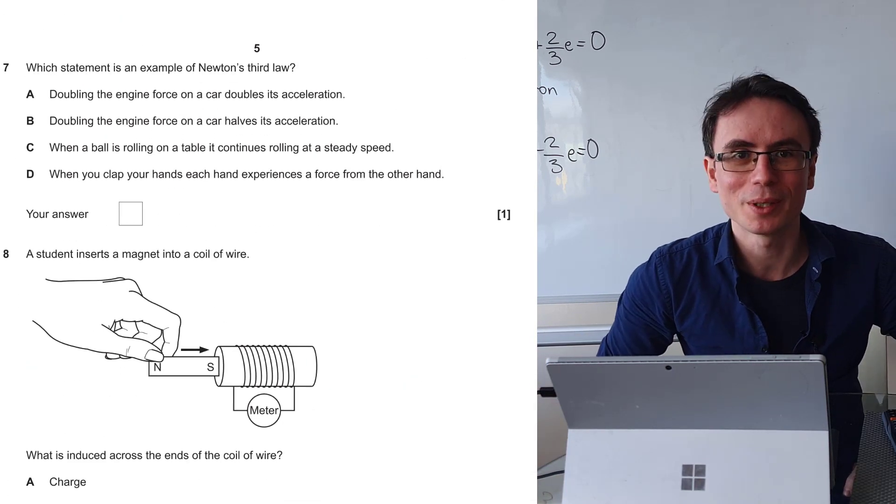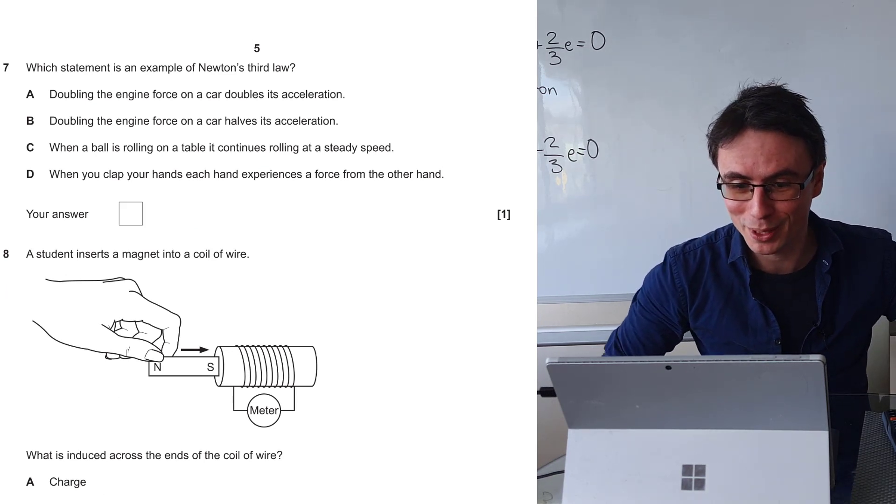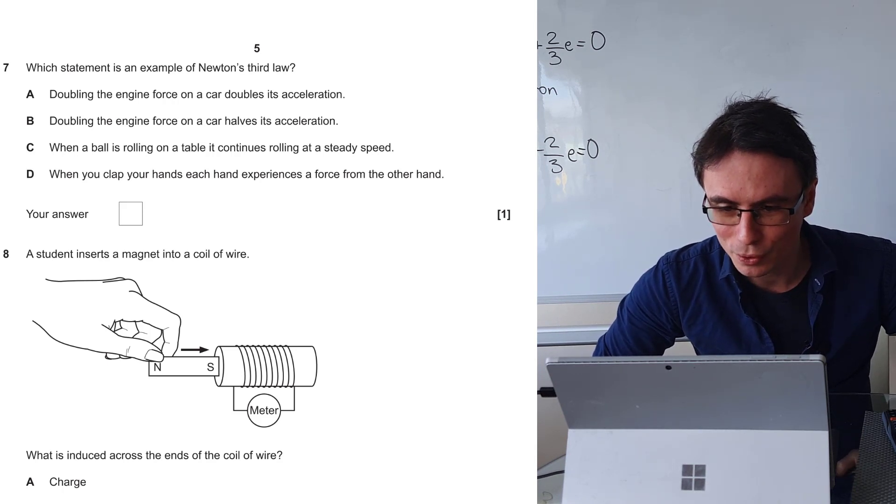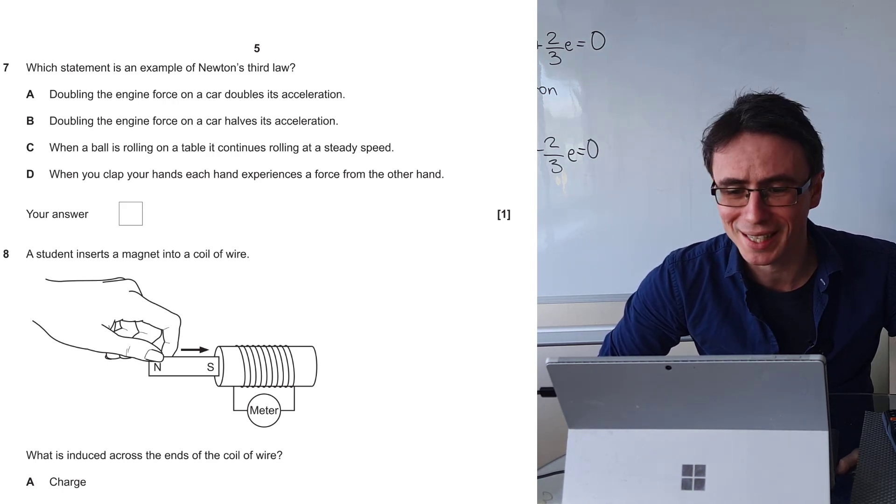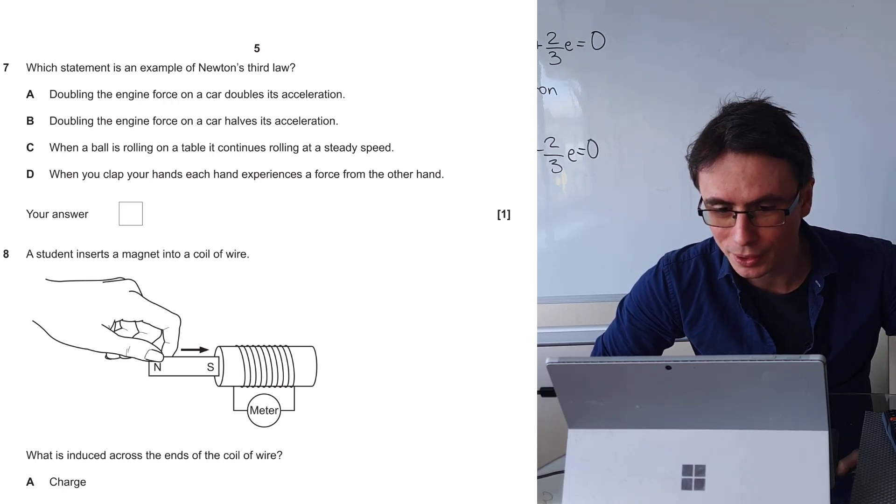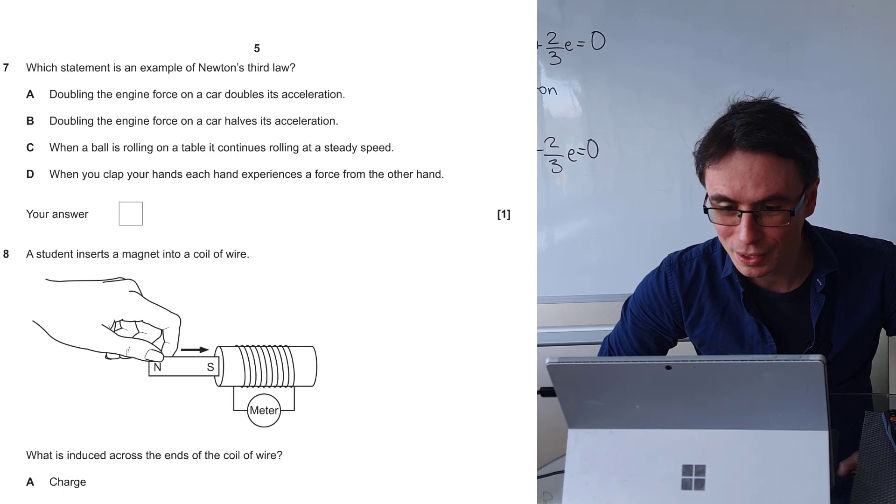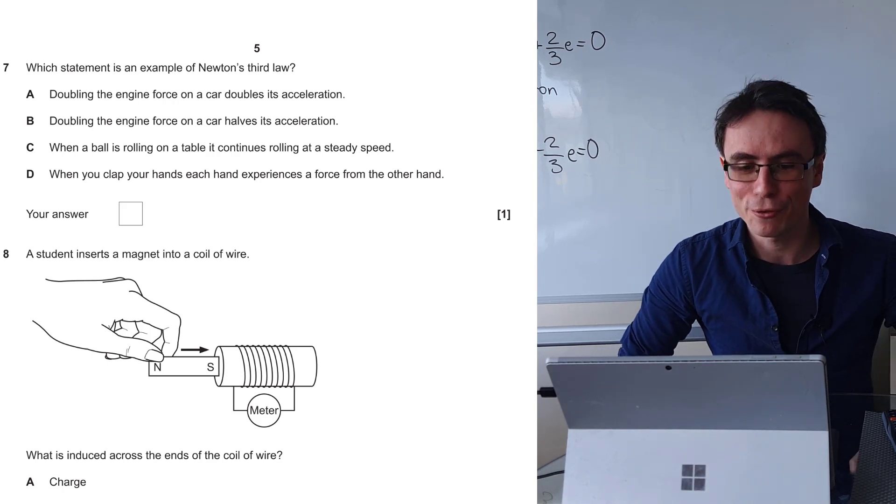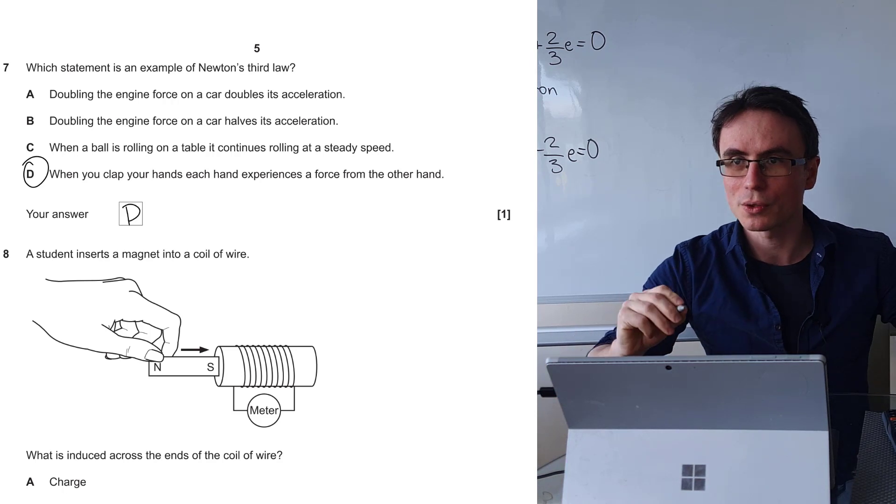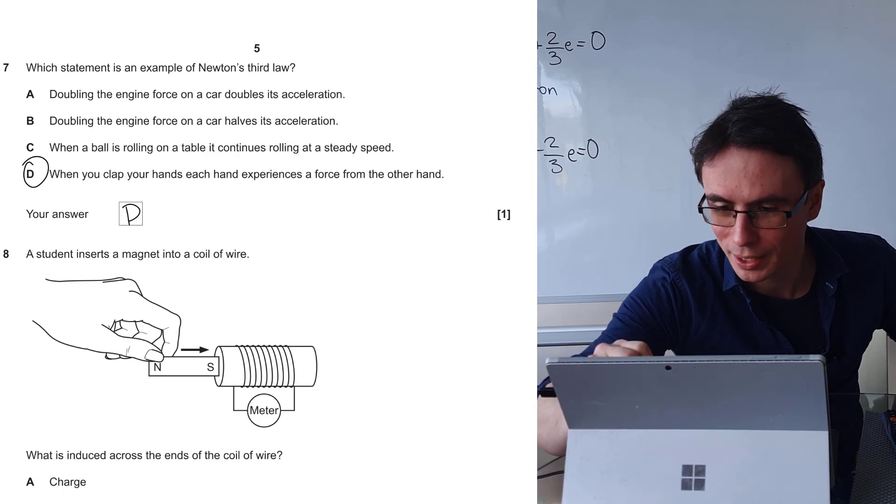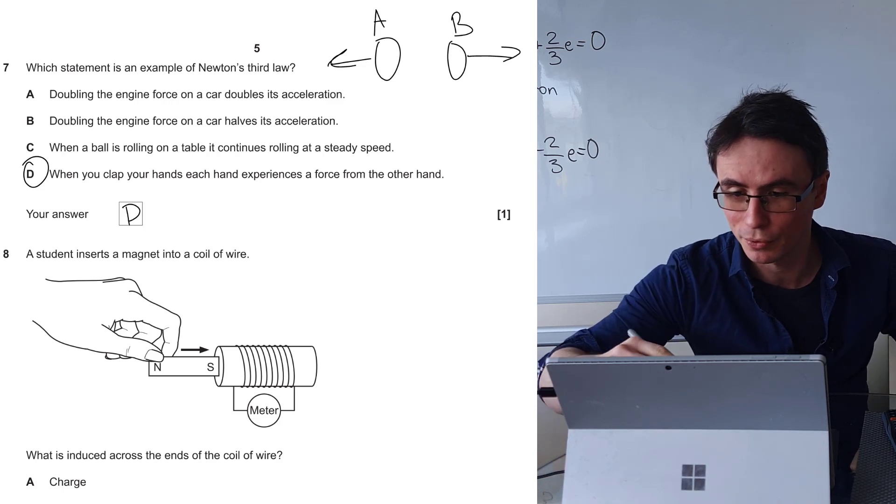Question 7. Which statement is an example of Newton's third law? This can be sometimes tricky and is very often misunderstood by students. Doubling the engine force on a car doubles its acceleration? No, this is more Newton's second law. When you clap your hands, each hand experiences a force on the other hand. The correct answer is definitely D. Remember, Newton's third law says that two bodies interact, let's say body A and body B, could be your hands clapping. They will exert equal and opposite forces on each other.